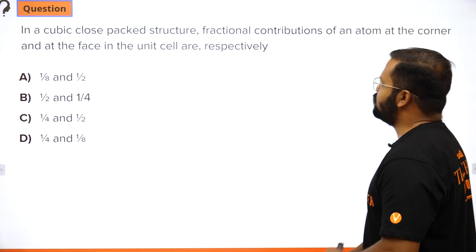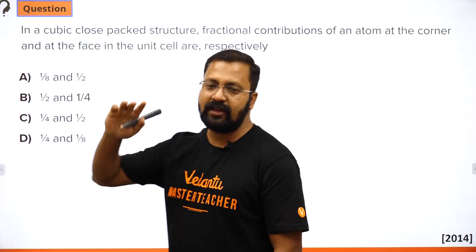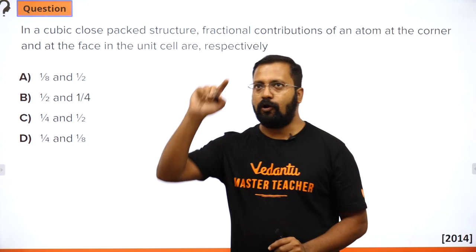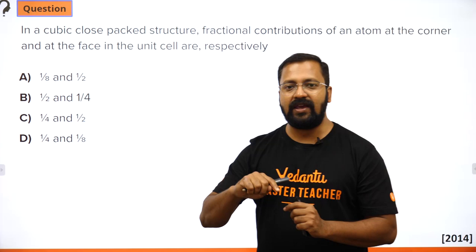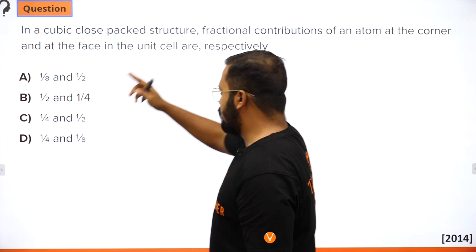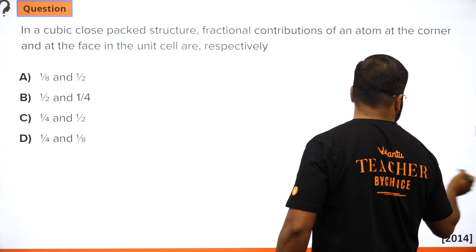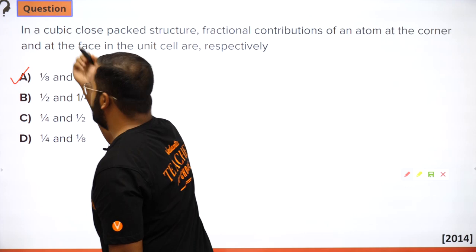Next question: in a cubic close-packed structure, the fractional contribution of an atom at a corner and face center. CCP is FCC. In any structure — FCC, simple cubic, BCC — whenever an atom is at a corner it contributes 1/8, and whenever it is at the face center it contributes 1/2. Right answer is A.